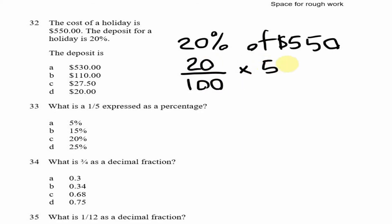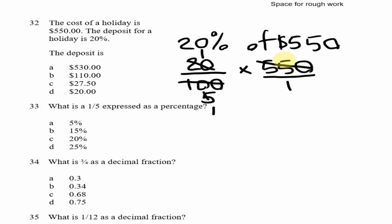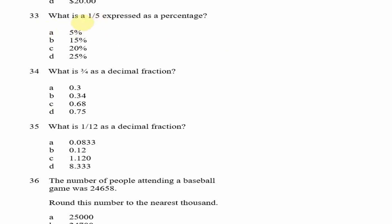So that's 20/100 × 550. We can do some simplifying: 20 into 100 goes 5 times, 5 into 550 gives us 110. So that's $110, which is option B.